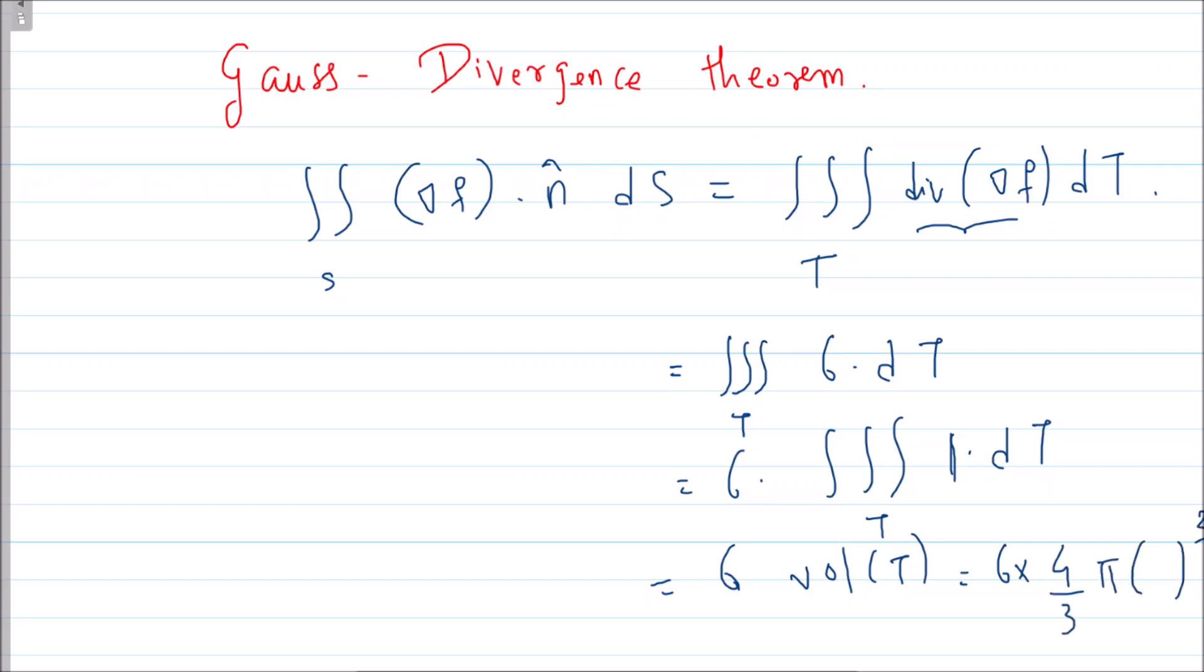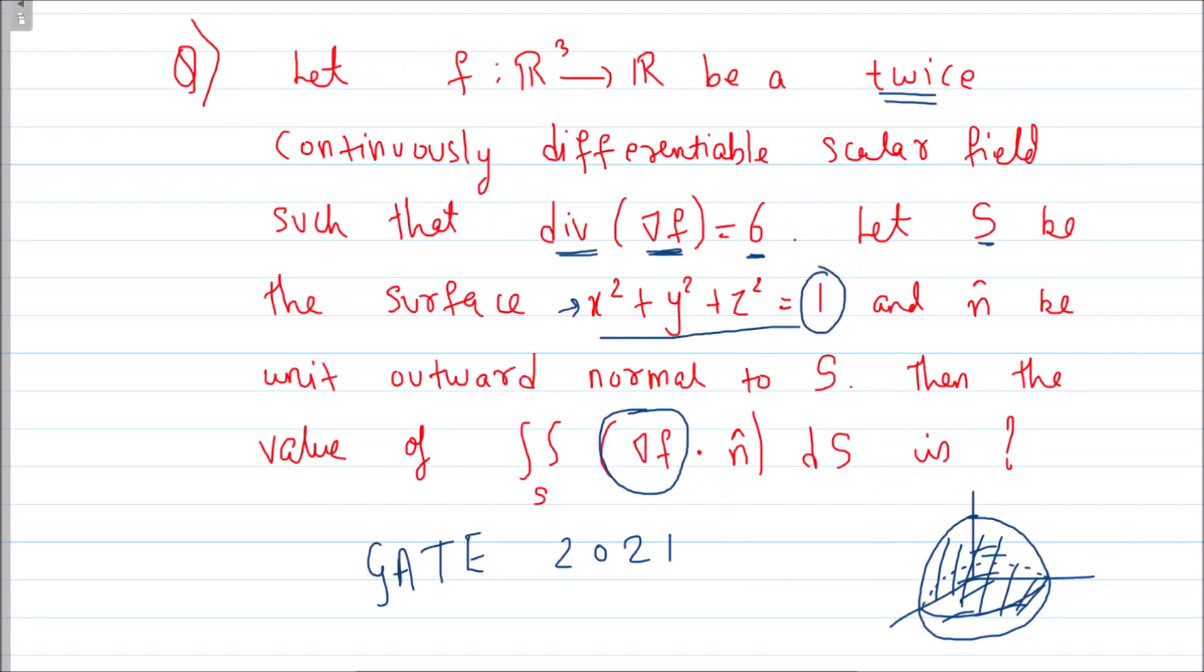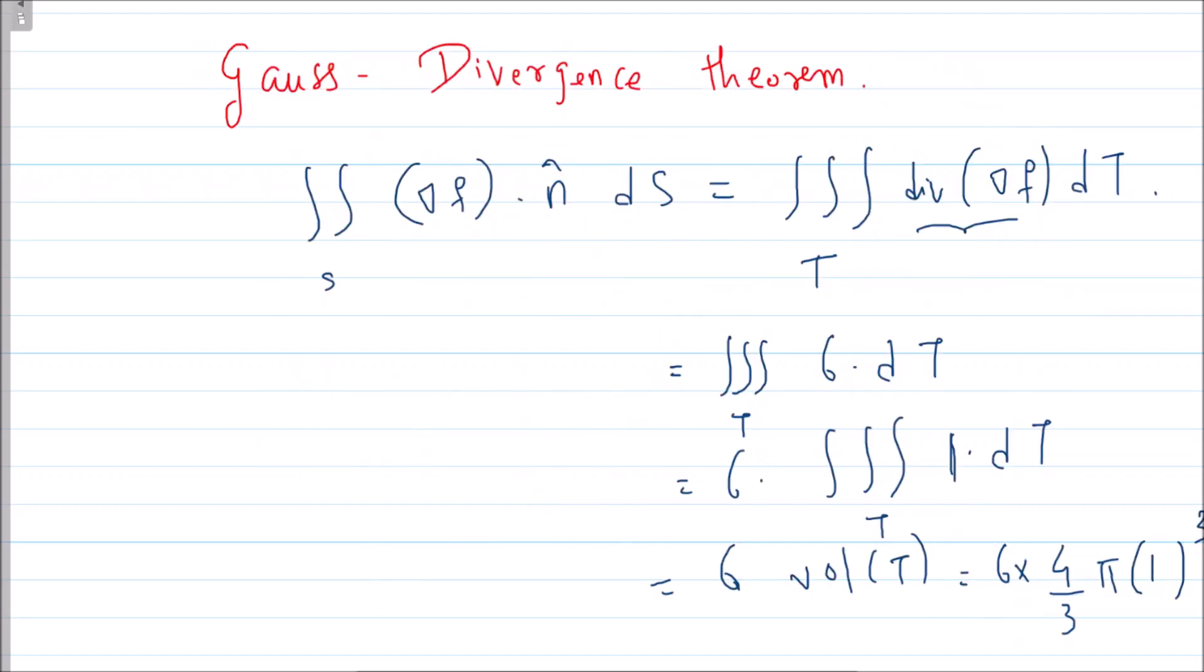So this is 1 cubed, so 3 ones are 3, 2s are—so the answer is 8π.